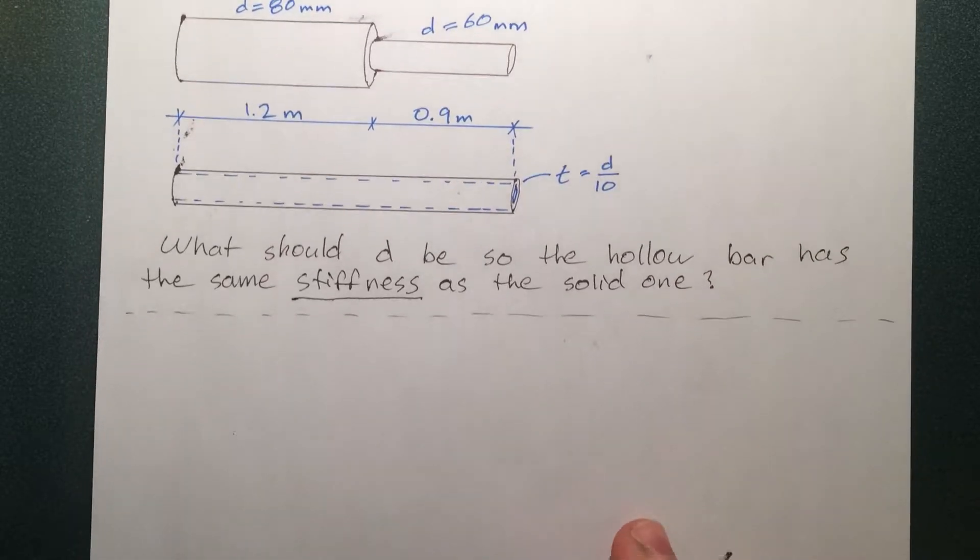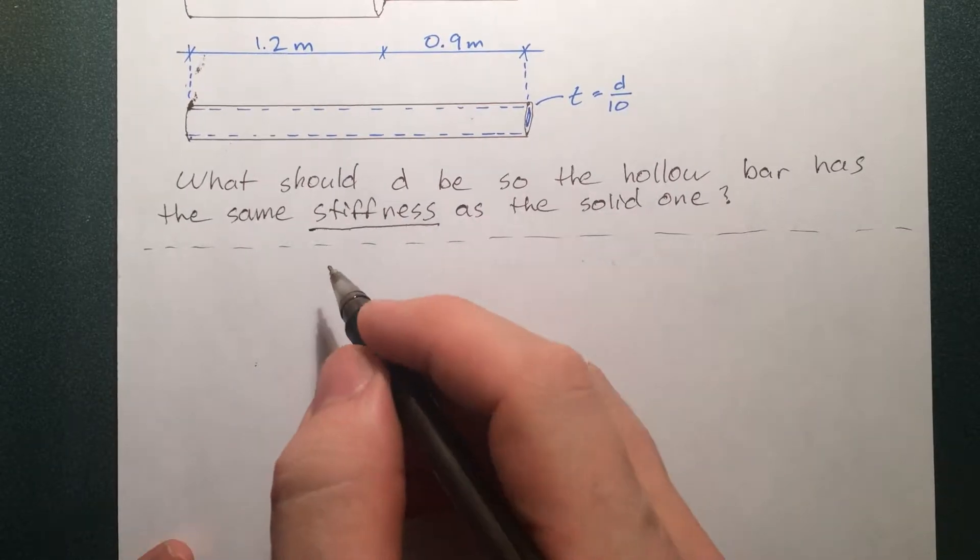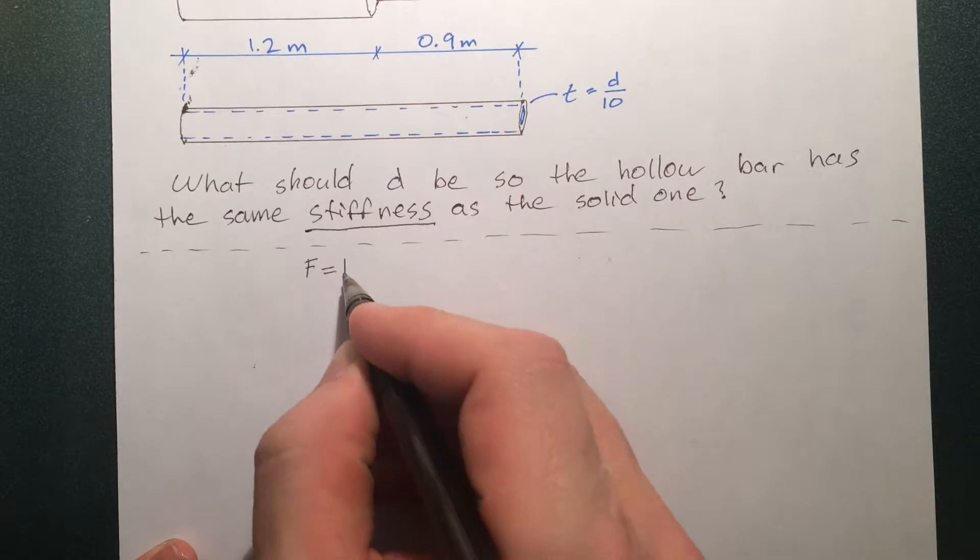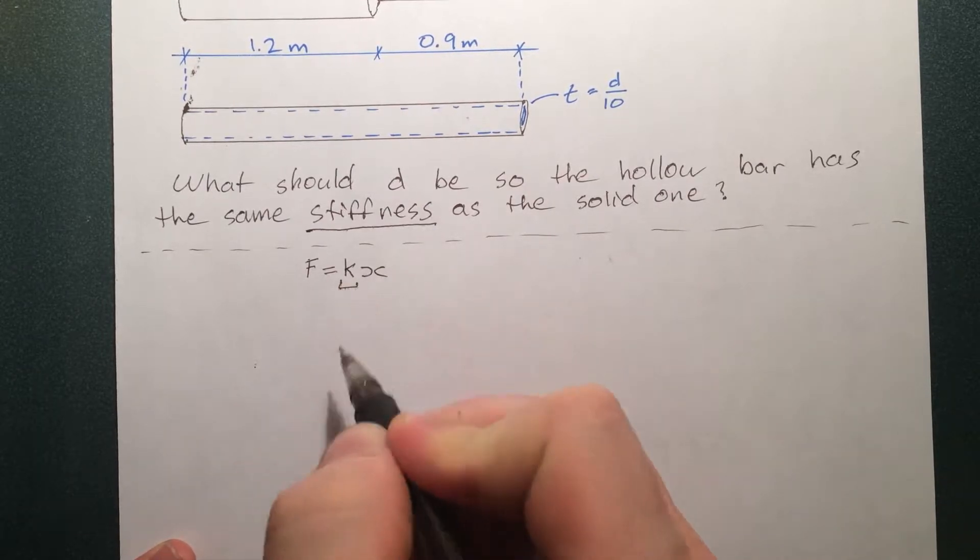So the way I like to think of torsional stiffness is if I compare it to the stiffness of like a spring, which we all can know is described by the equation F equals KX. And this here is the stiffness.